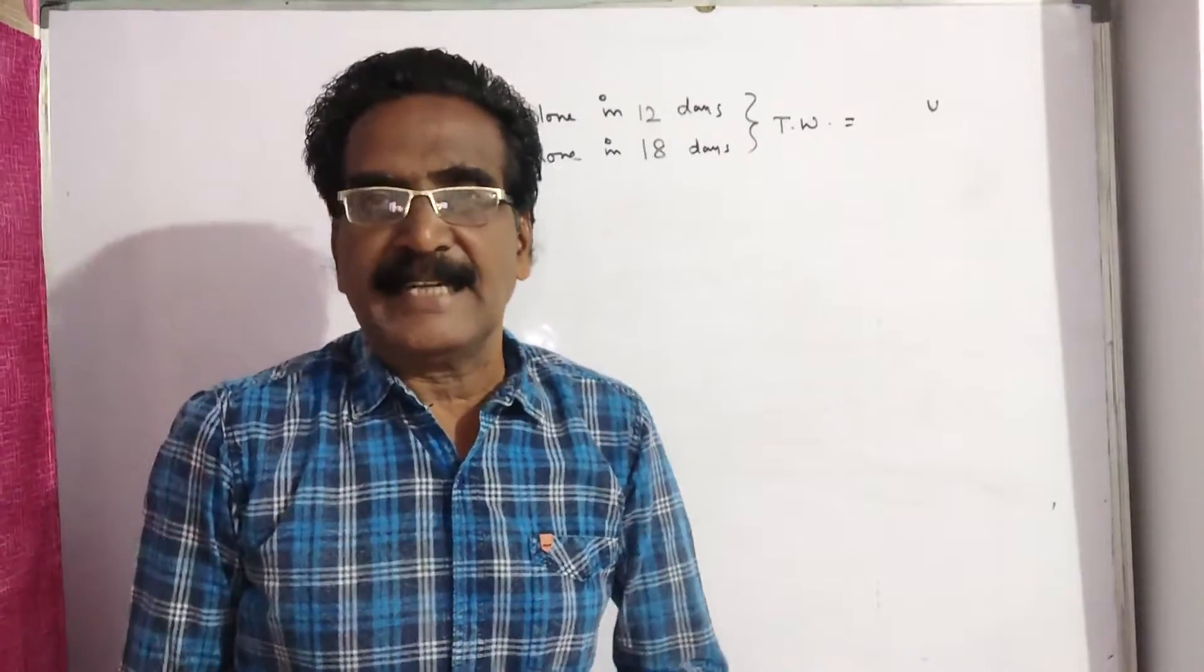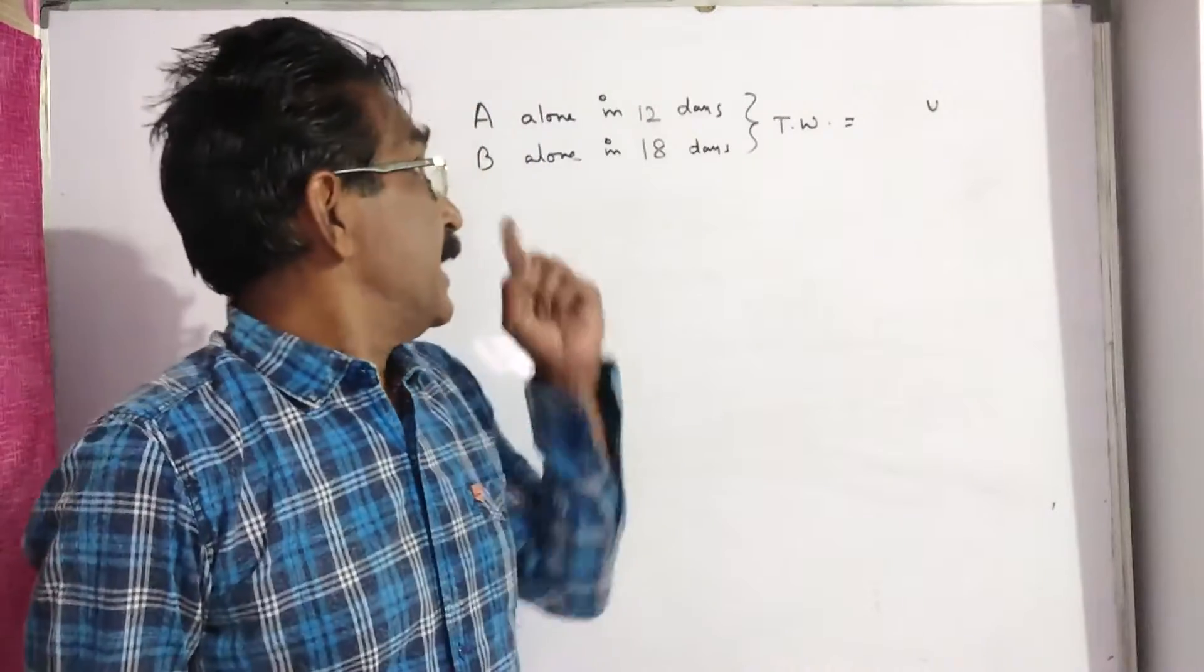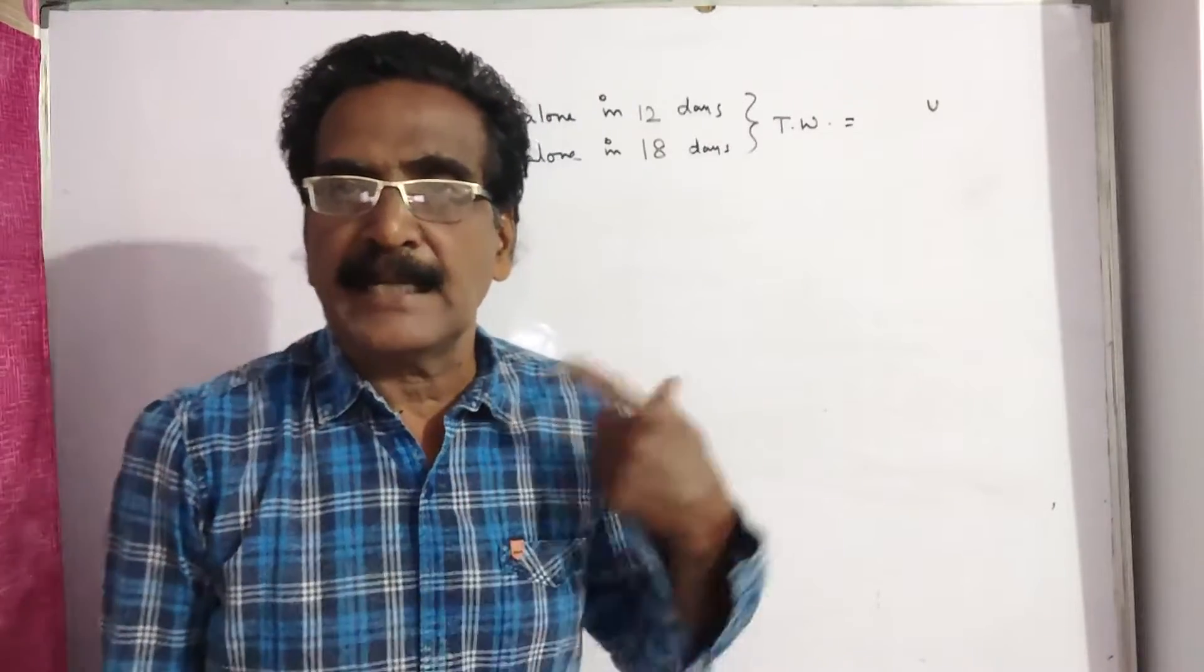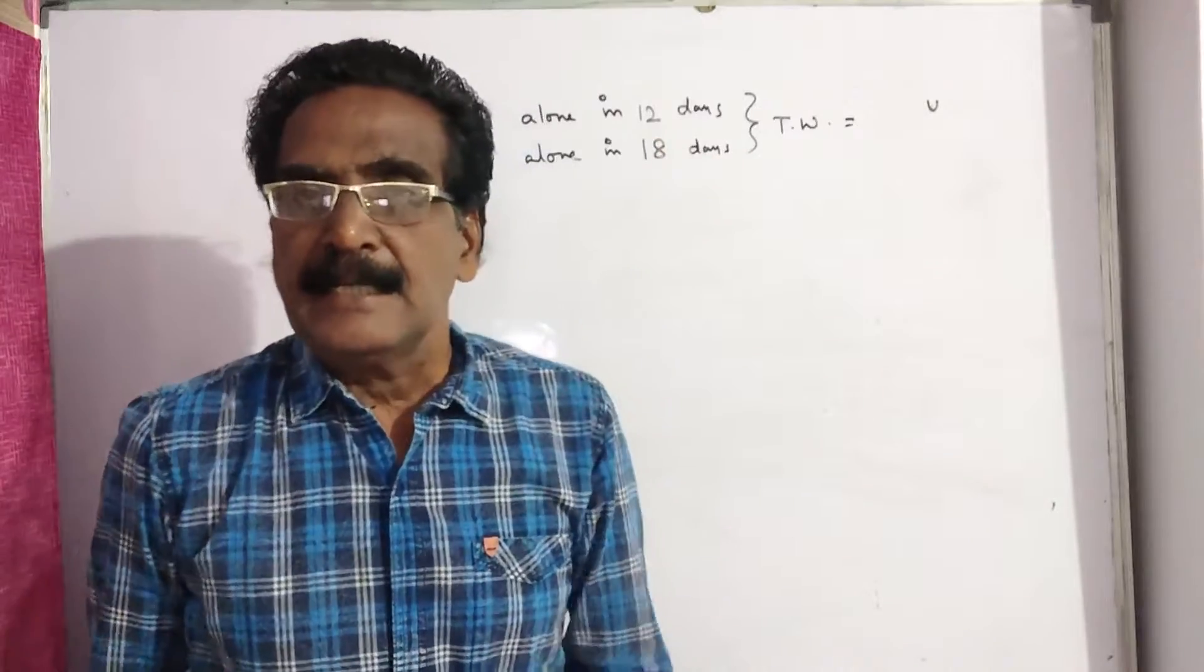Hi friends, good morning. Please look at the next problem. A alone can complete a work in 12 days, whereas B alone can complete the same work in 18 days. If they work on alternate days with A beginning first, in how many days will the total work be completed?